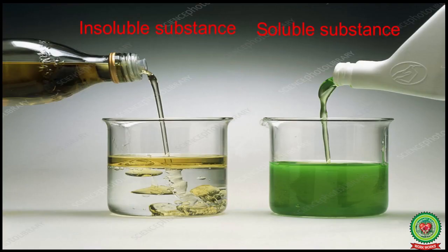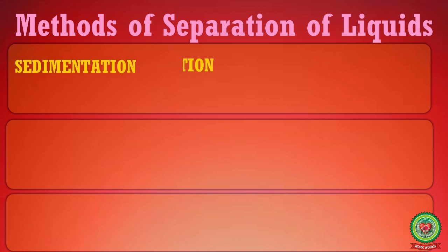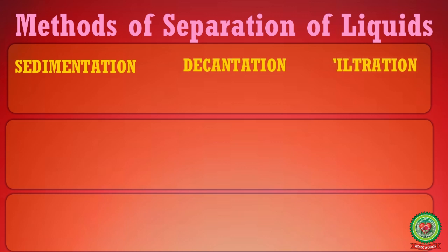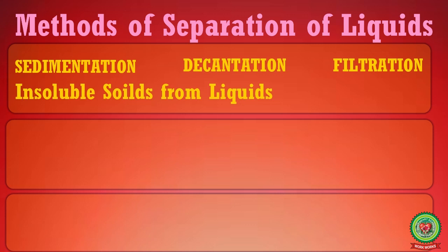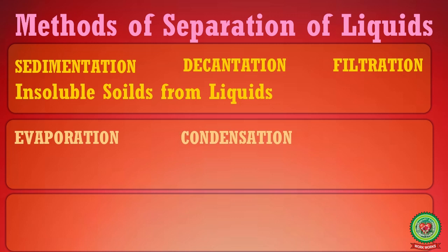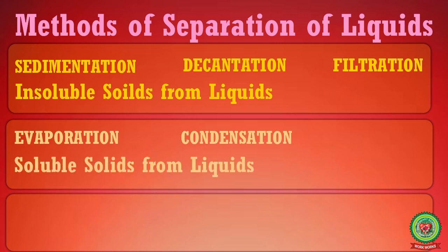As we have already discussed, there are two types of substances: soluble substances and insoluble substances. Depending upon the types of substances, there are different methods of separation. Methods like sedimentation, decantation, and filtration are used to separate insoluble solids from liquids, while evaporation and condensation are used to separate soluble solids from liquids.